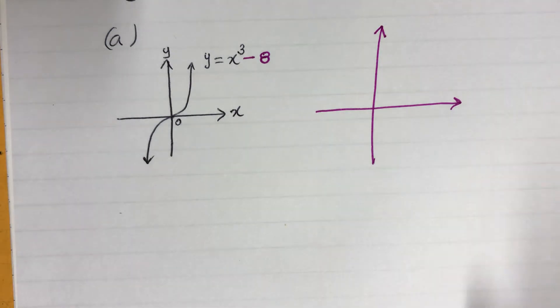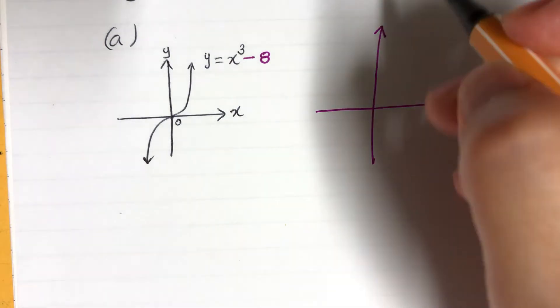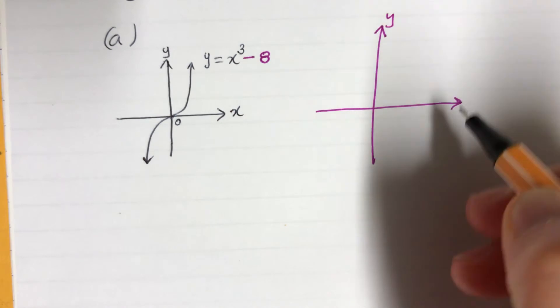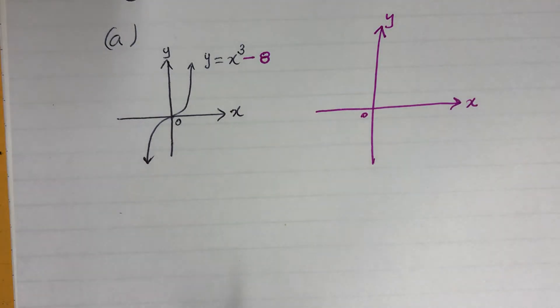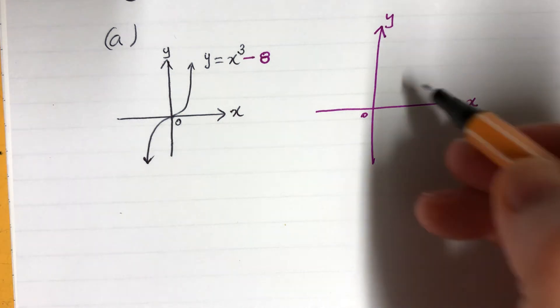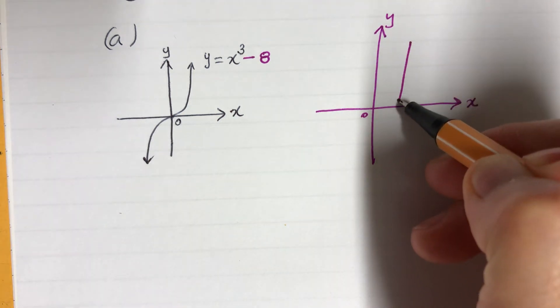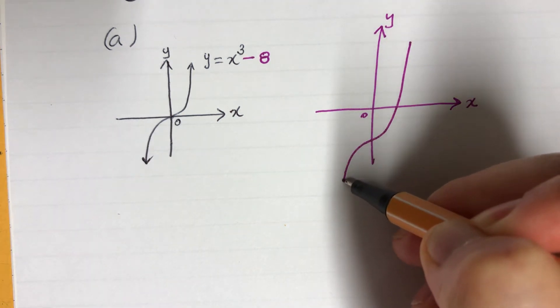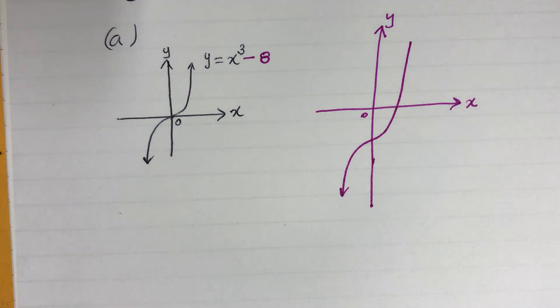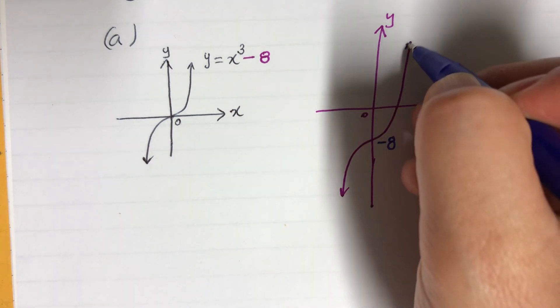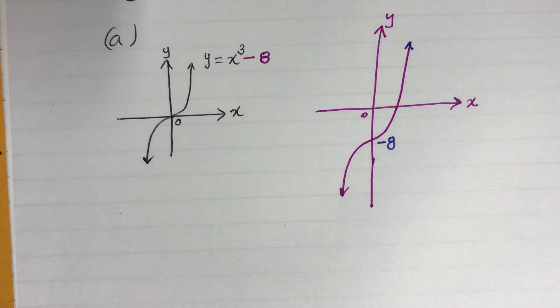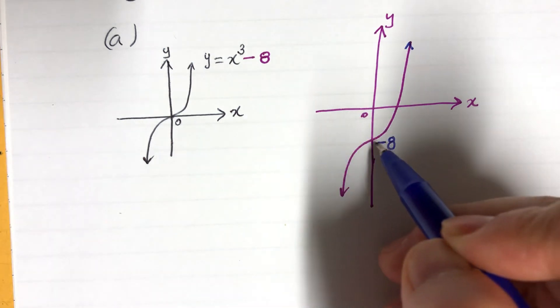What I'm doing is a very rough sketch. You should use grid paper and do it properly. I'm bringing this graph down to minus 8 right there. The whole thing is down to minus 8.